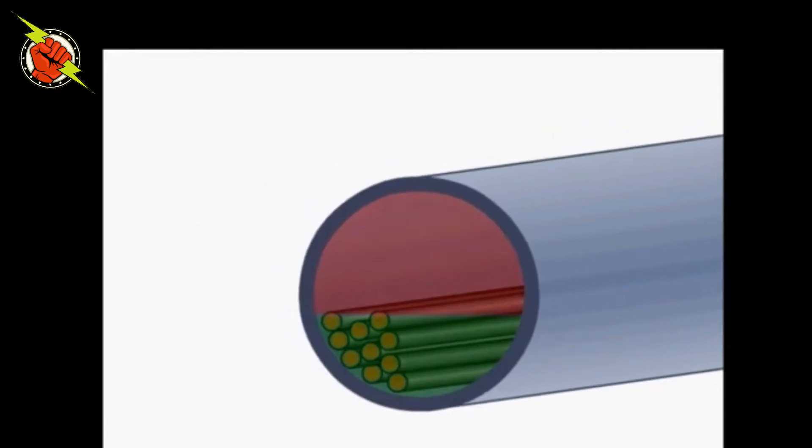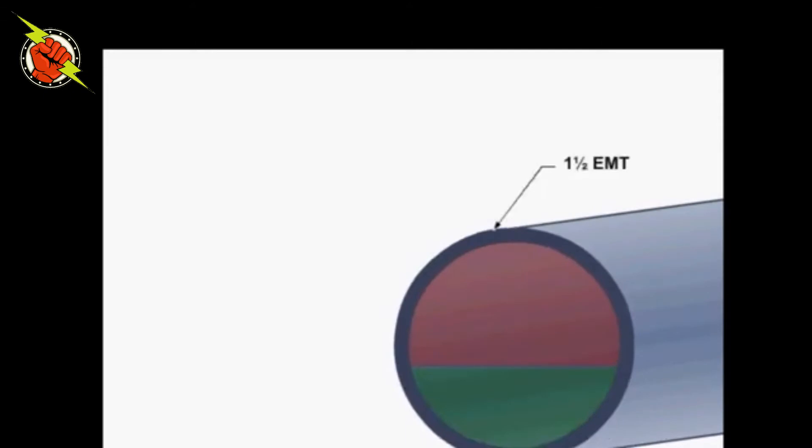If the conduit being used is 1.5-inch EMT, per Table 4 in the NEC, 40% of the cross-sectional area of 1.5-inch EMT containing more than two conductors equals 0.814 square inches.